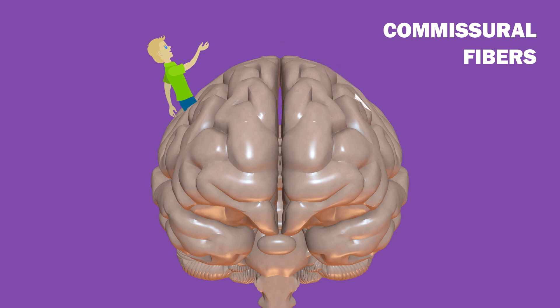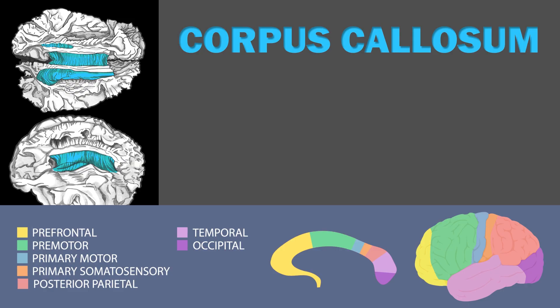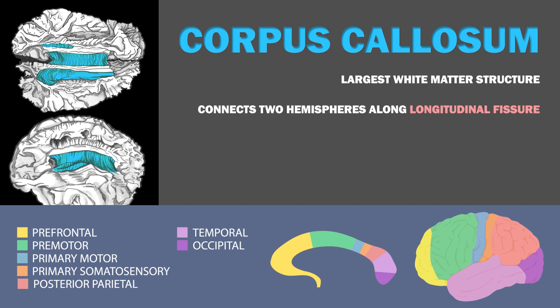Let's start off with the commissural tracts, which all cross the midline. The most impressive of these is the corpus callosum. This is the largest white matter structure in the brain, and it connects the two hemispheres, spanning a portion of the longitudinal fissure.